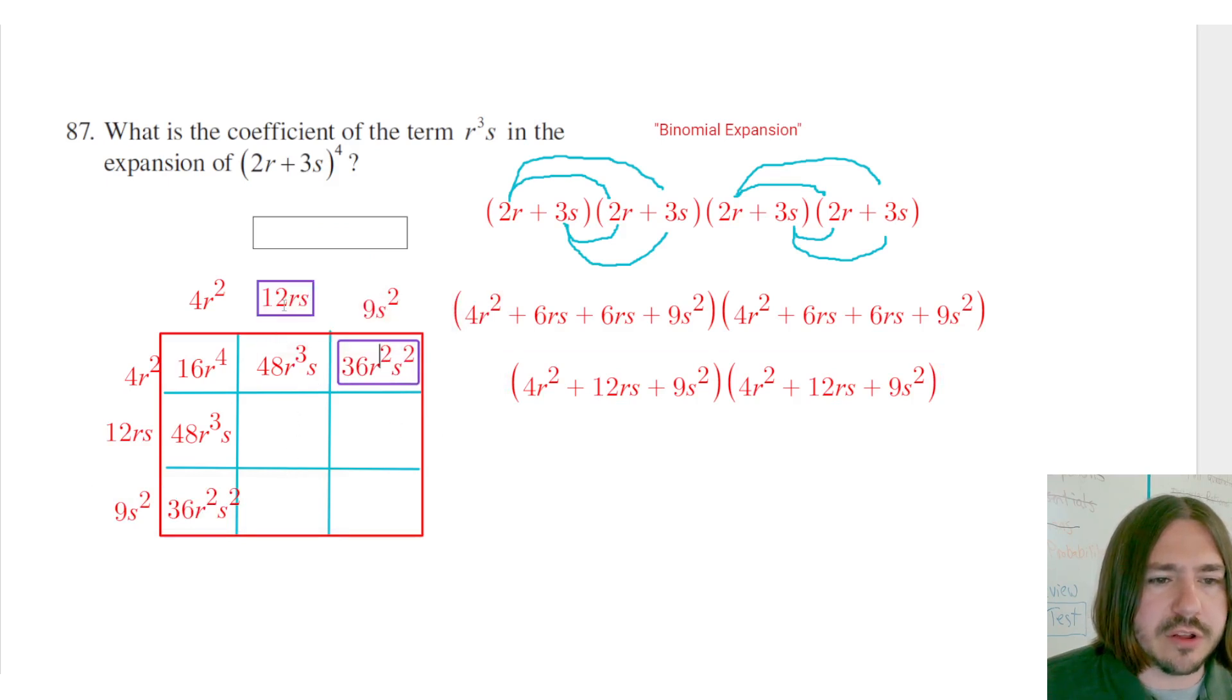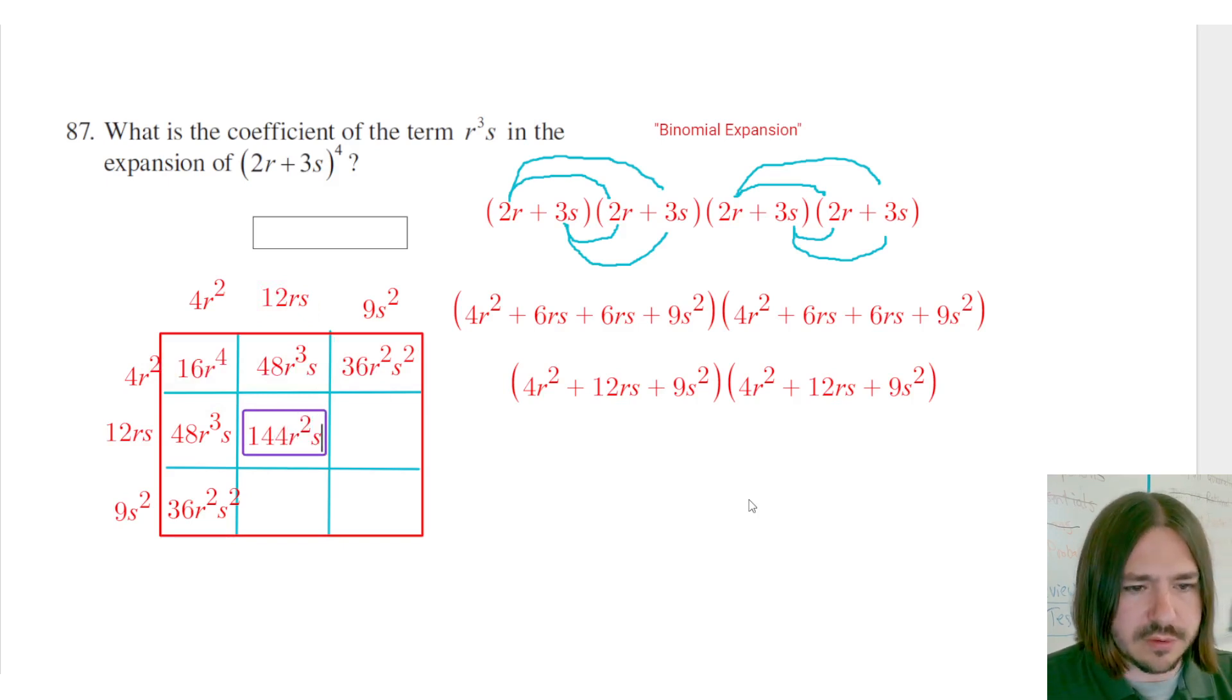Okay, in this middle column, I've got 12 times 12, it's going to be 144. And then I've got two r's and two s's. So we don't really care about that one. But we'll just do the entire multiplication out so you can kind of see how it all plays out.